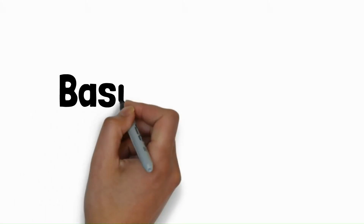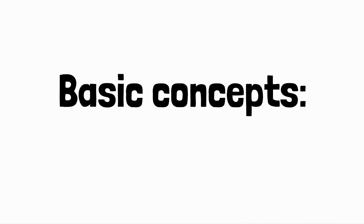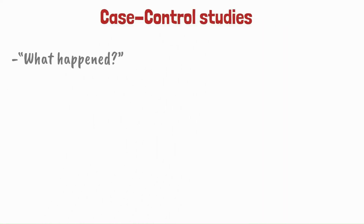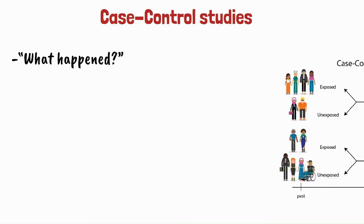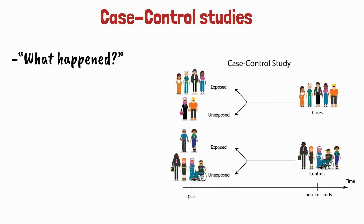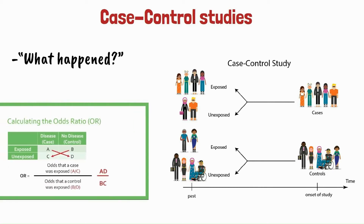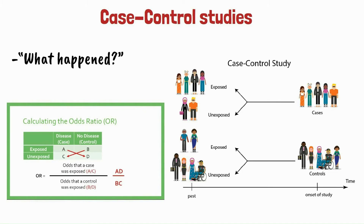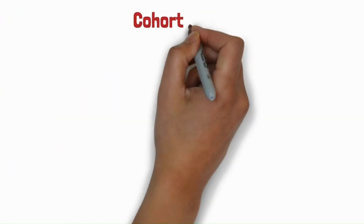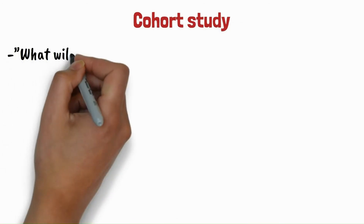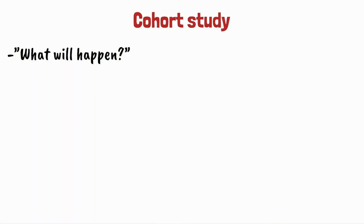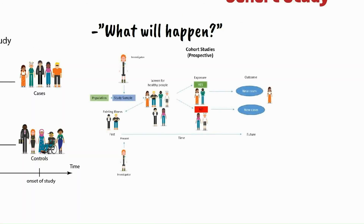Starting off with basic concepts, let's look at types of studies. Case-control studies — this study asks 'what happened?' These are observational and retrospective. They compare a group of people with a disease to a group without the disease, looking for prior exposure or risk factors, and measure the odds ratio.